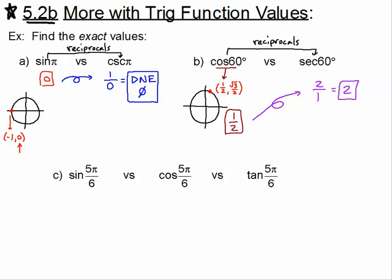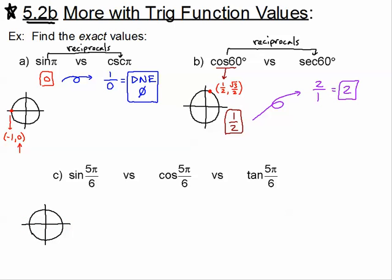Our final problem on this page: we're going to look at the sine of 5π/6, the cosine of 5π/6, and the tangent of 5π/6. We need to figure out where 5π/6 is. When somebody says anything pi over six, I know I'm talking about my 'cat whiskers.' There's 1π/6, then 5π/6, then 7π/6, then 11π/6. So 5π/6 is right here. The ordered pair is negative square root of three over two for x, and one-half for y.